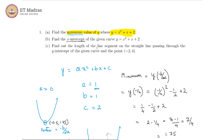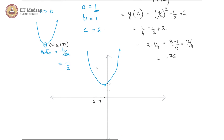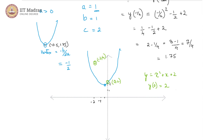Lastly, we are asked to find the length of the line segment on the straight line passing through the y-intercept of the given curve and the point minus 2 comma 4. The point minus 2 comma 4 is plotted on the graph. We need to find the y-intercept. Since our curve is y equals x squared plus x plus 2, the y-intercept is obtained when x equals 0, giving y of 0 equals 2. Therefore, the y-intercept is 0 comma 2, and the other point is minus 2 comma 4.